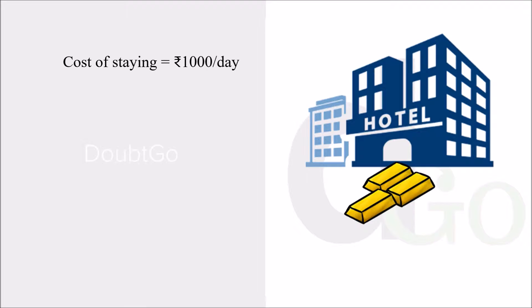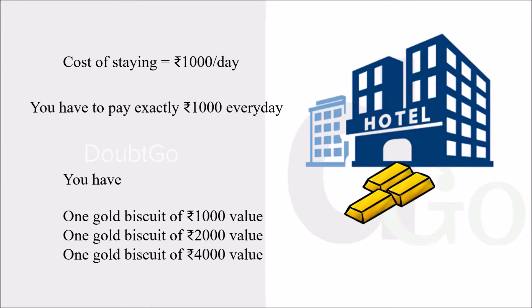So let's see the given details. The cost of staying is rupees one thousand per day and you have to pay exactly rupees one thousand every day. You have three gold biscuits: one of rupees one thousand value, one of two thousand value, and one of rupees four thousand value. Pause the video to figure out the solution, and when you are done, keep watching.